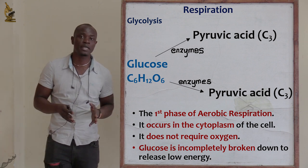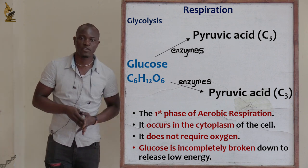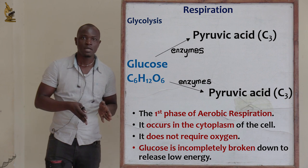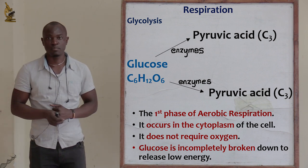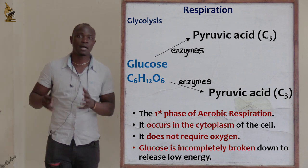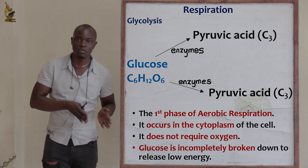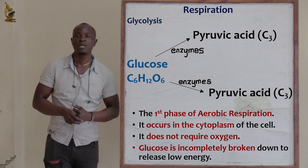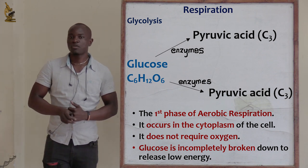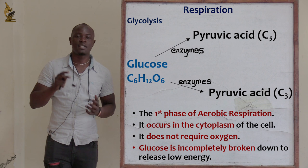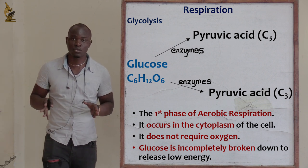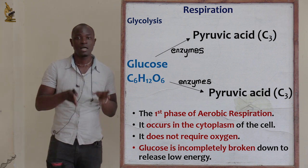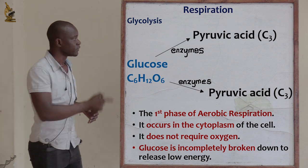The next step produces two molecules of ATP. One molecule of ATP is formed first, then the second molecule, giving two molecules of ATP in total. Importantly, this process does not require oxygen. The first phase of aerobic respiration — glycolysis — does not require oxygen to take place.